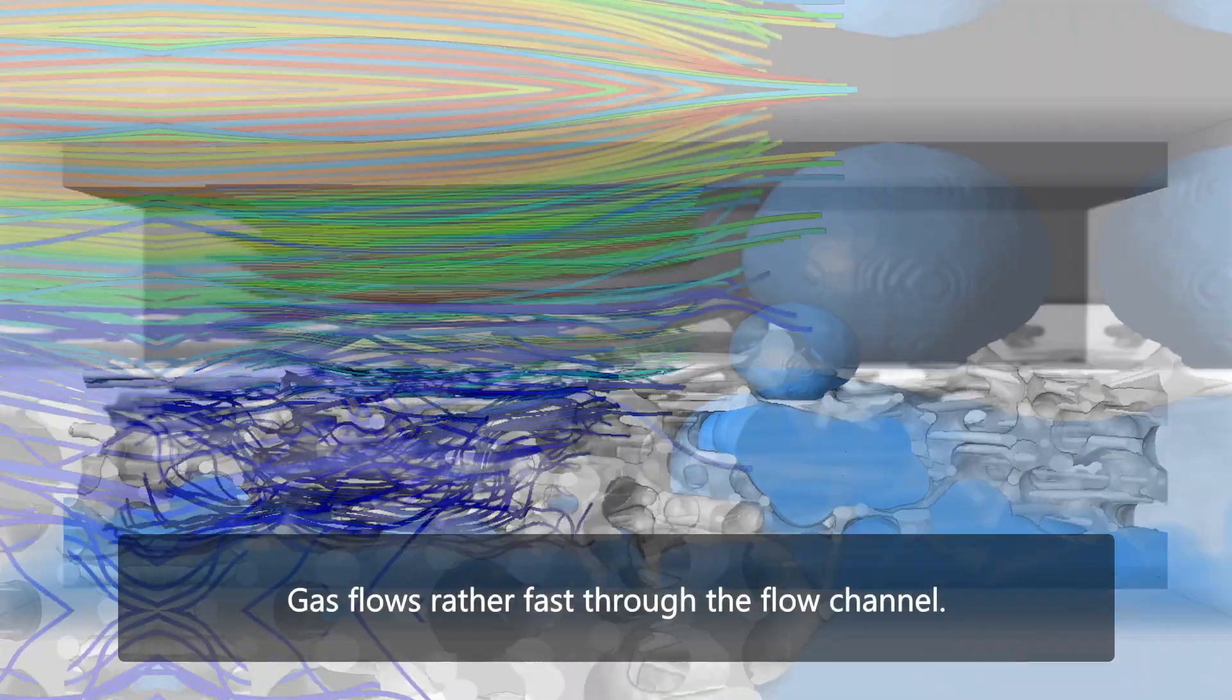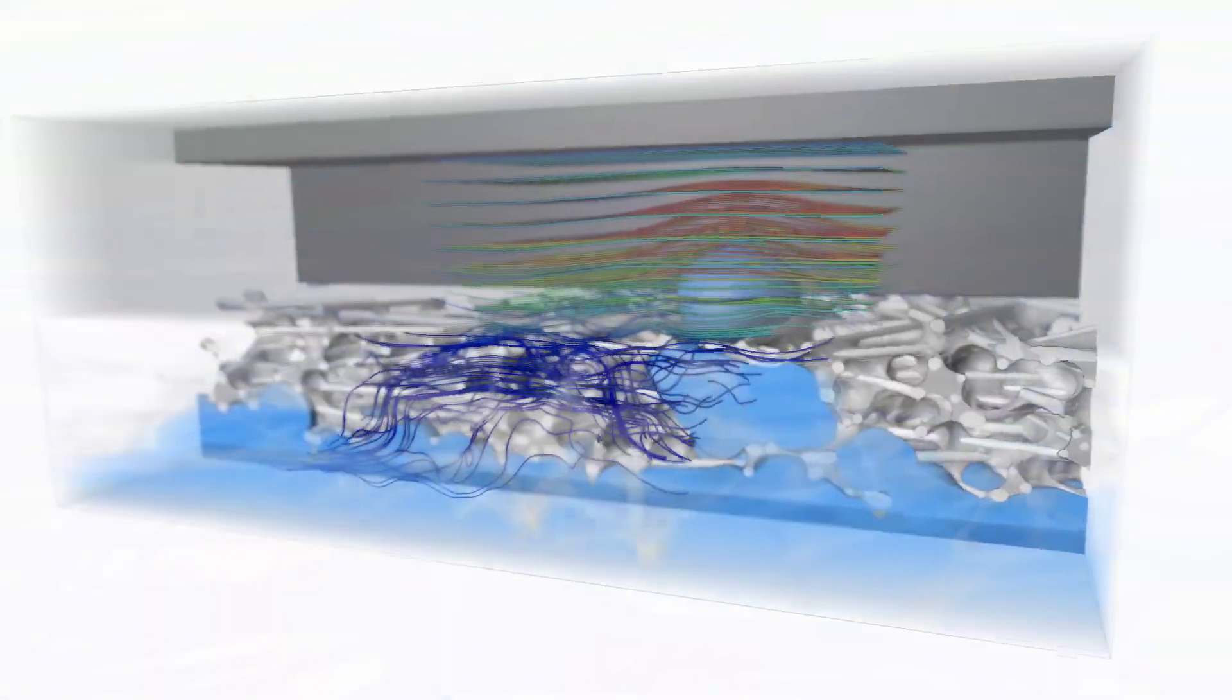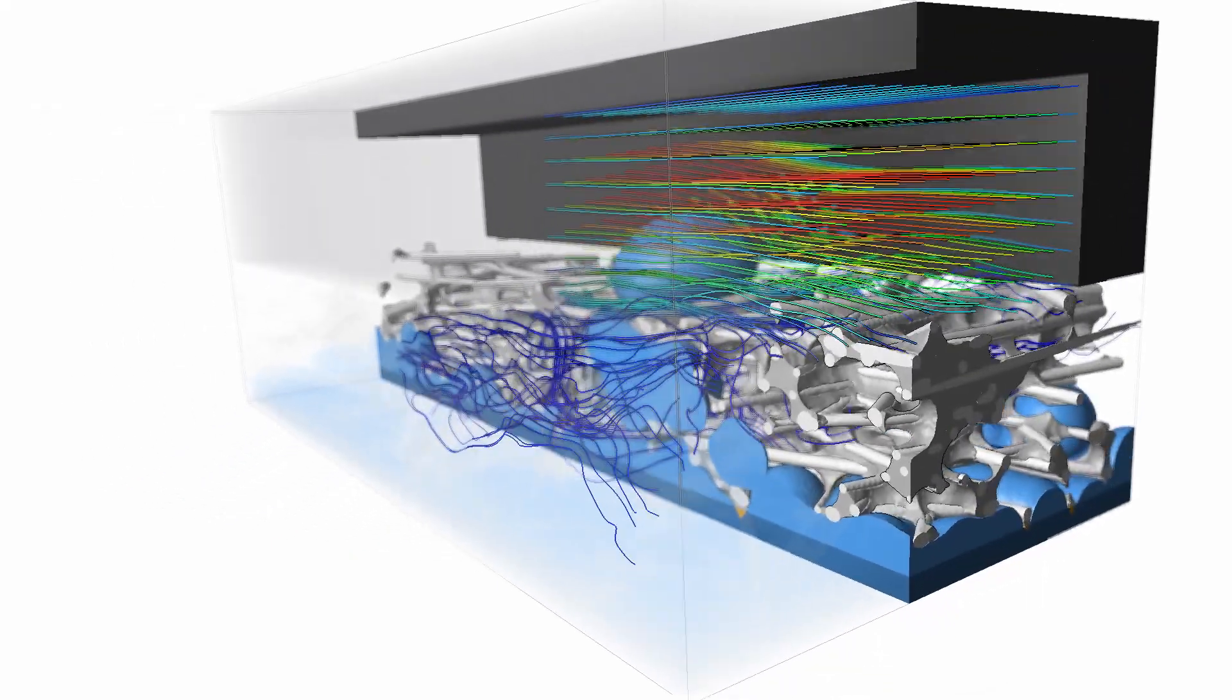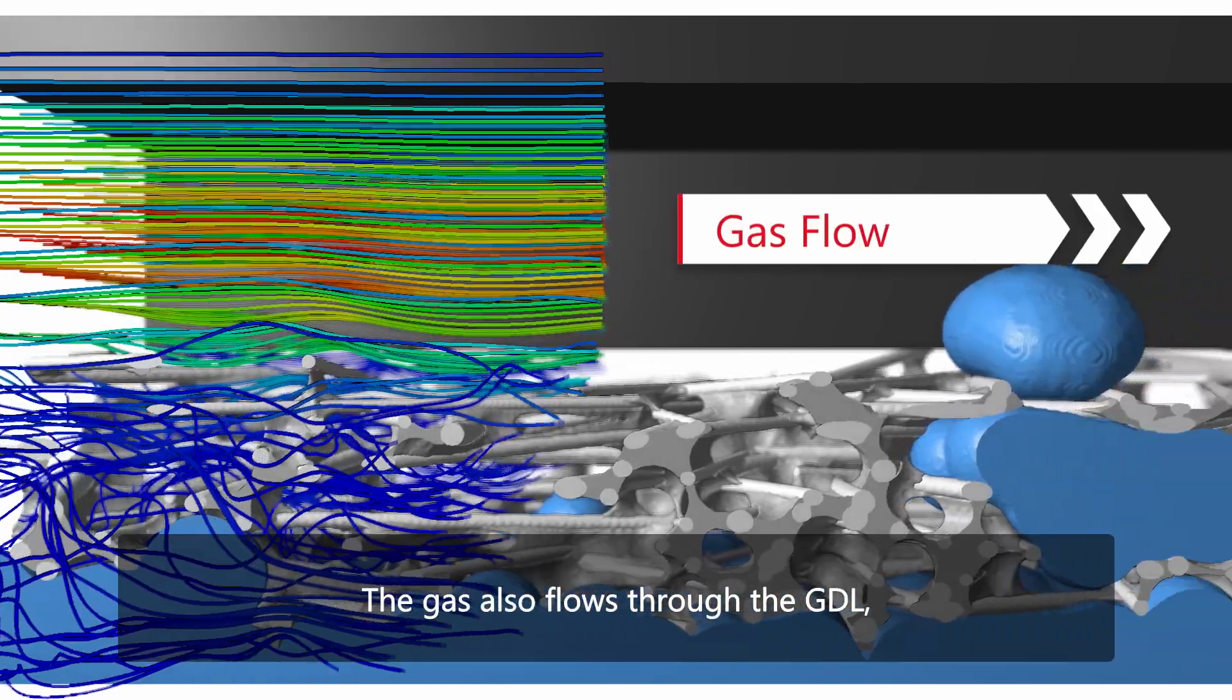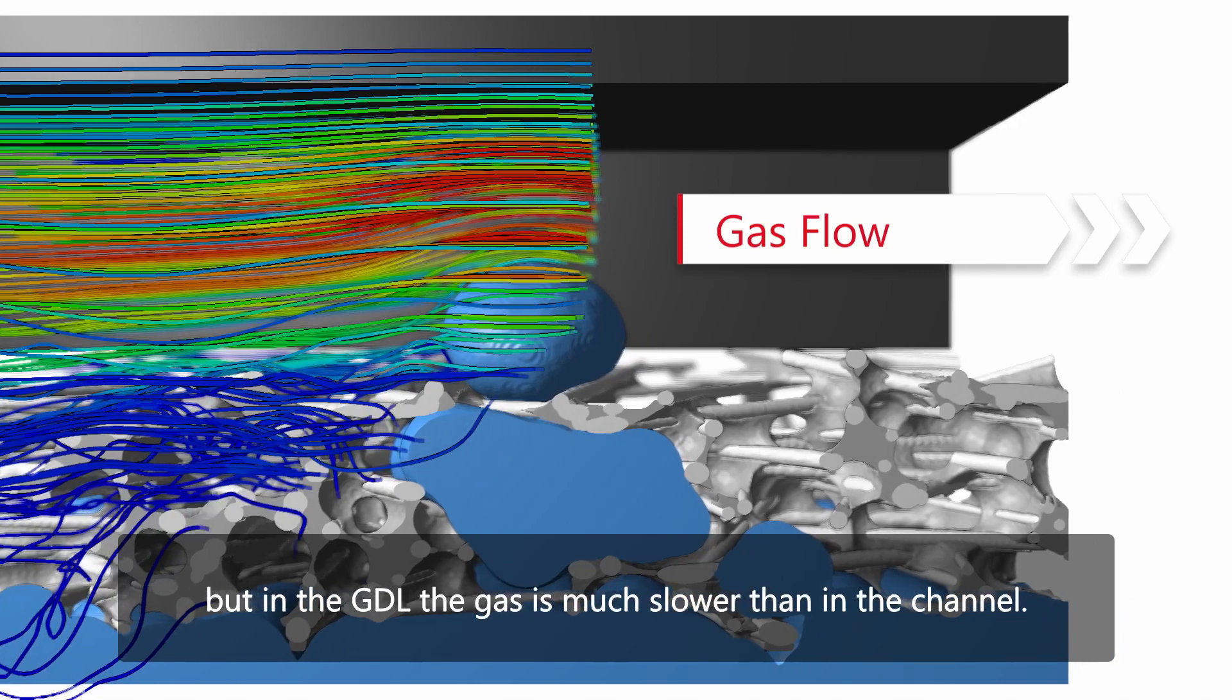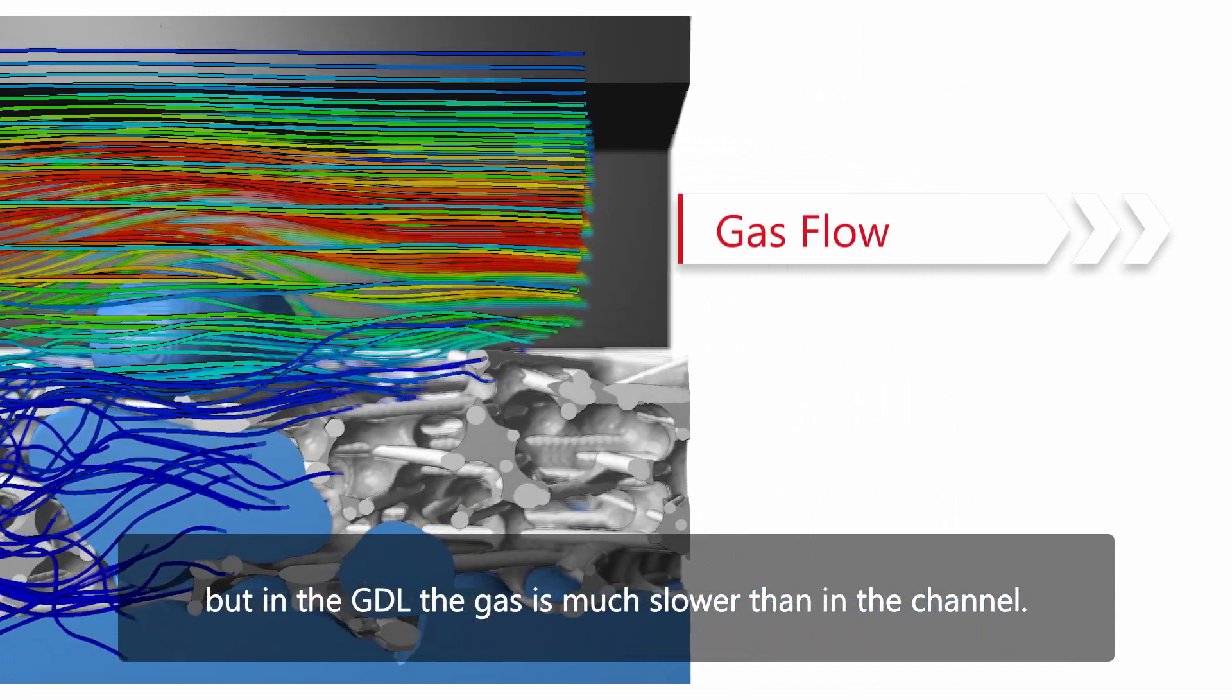Gas flows rather fast through the flow channel. The gas also flows through the GDL, but in the GDL the gas is much slower than in the channel.